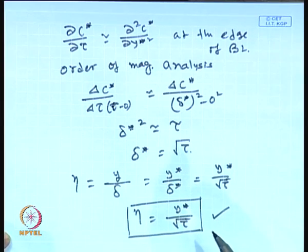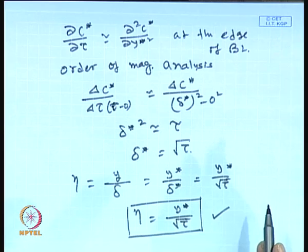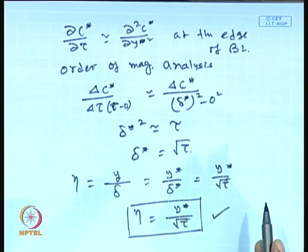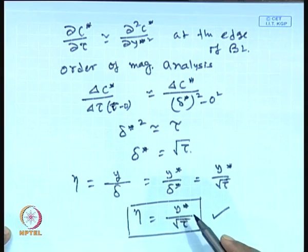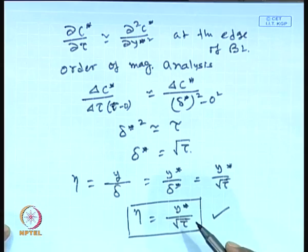Using this similarity parameter, we express the derivatives of the governing equation in terms of the single combined parameter, reducing the two independent variables y* and τ to one. The governing partial differential equation becomes an ordinary differential equation, which can be solved as we did earlier in the cross-flow case. We will look into the solution in detail in the next class. Thank you.